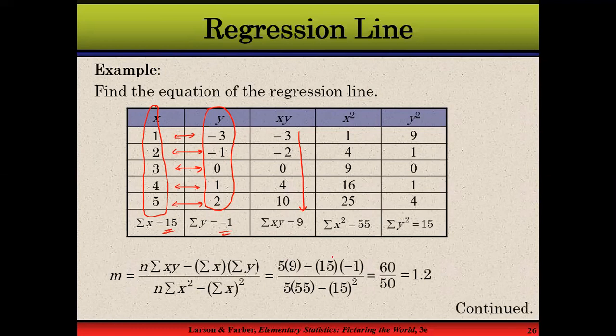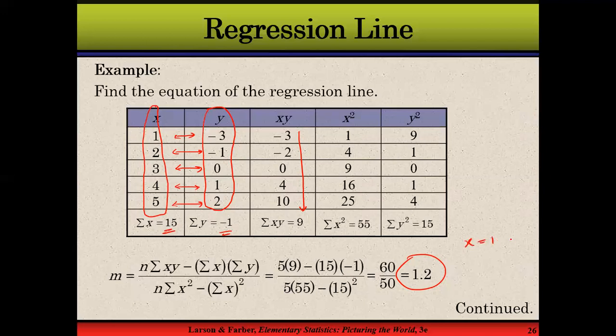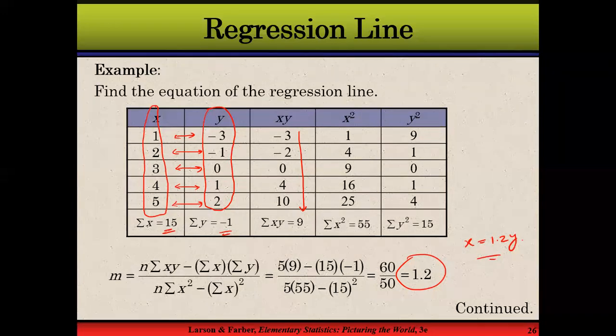So the value of slope here is 1.2. Now what is the intuition here? What does this 1.2 explain? This explains that the change in x variable will result in 1.2 change in y. So the slope actually shows that with one unit change in x, there is more than one unit change in y, and exactly 1.2 units of y would change.